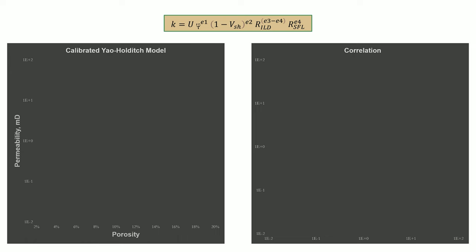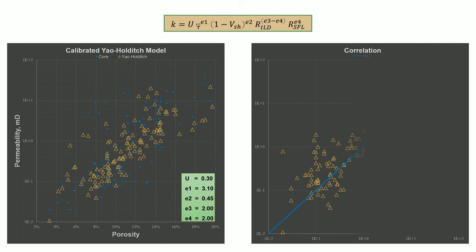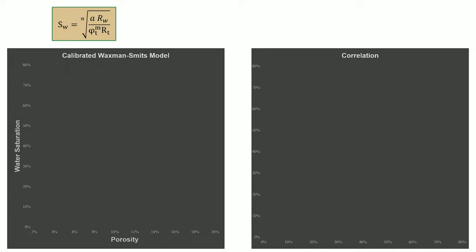Many correlations exist that allow permeability estimation from logs. However, out of the variety, only the geological basis of the Yao-Holditch model is similar to that of the tight Cardium sandstone. Results show that we have a decently calibrated permeability equation, with a large cluster of values around the unity line.